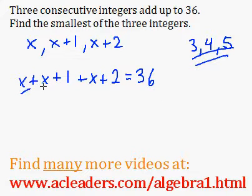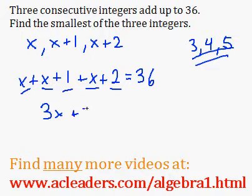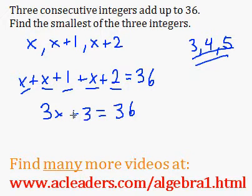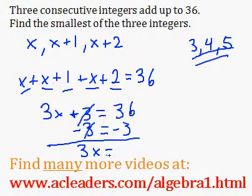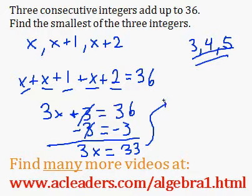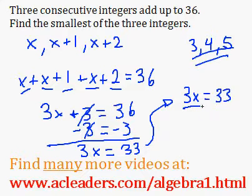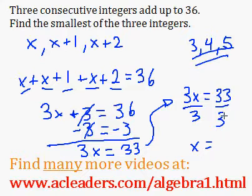So x plus x plus x is 3x, and 1 plus 2 is 3, and that is equal to 36. Now I can subtract 3 from both sides of the equation, and I get 3x equals 36 minus 3, which is 33. So 3x is 33. To solve for x, I can just divide both sides by 3, and x will be 33 over 3, which is 11.